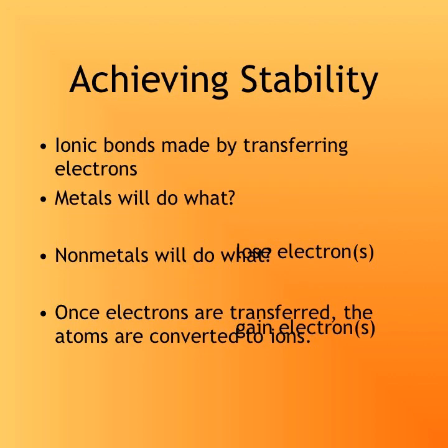Ionic bonds are made when atoms transfer electrons — they can either gain or lose an electron. Look at your periodic table and consider what metals will do to reach stability. Sodium has one valence electron, so it wants to lose that electron. Aluminum has three valence electrons and probably wants to lose all three. So metals will lose electrons.